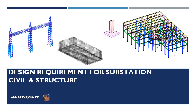In this slide, you can see the gantry structure on the left side. Generally, the gantry structure is the tallest structure in any substation project. Next is a 3D reinforcement view of an oil collection tank, followed by a single foundation for a single-phase equipment support structure. On the right side is a frame for a control room building.